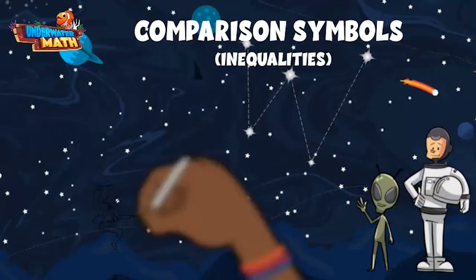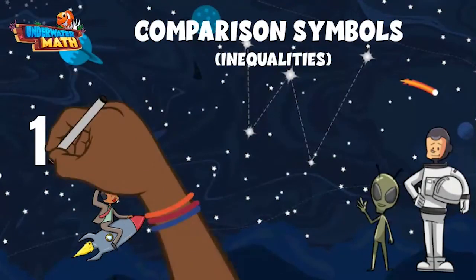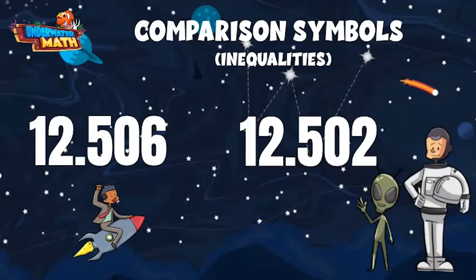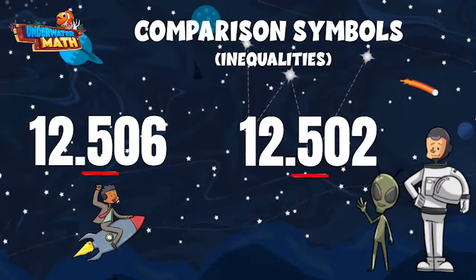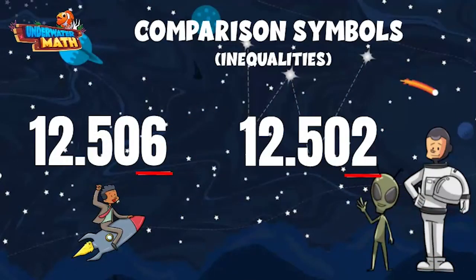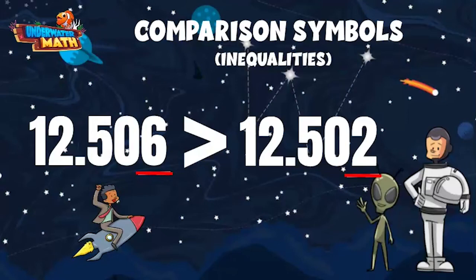Let's try one more. Lenny and Sam are comparing the distances they travel to be here today. Sam traveled 12.506 miles, and Lenny traveled 12.502 miles. Which inequality statement will we put between these two distances? Again, we start in the furthest place value to the left. Both numbers have a 1 in the tens place and a 2 in the ones place value. They each also have a 5 in the tenths place and a 0 in the hundredths place. There is a difference in these two numbers once we get to the thousandths place value. Sam has a 6 in his number, but Lenny has a 2. 6 is greater than 2, which means he traveled a greater distance. We want our comparison symbol to open up to the bigger number, so we will use our greater than symbol. This statement reads 12.506 is greater than 12.502.